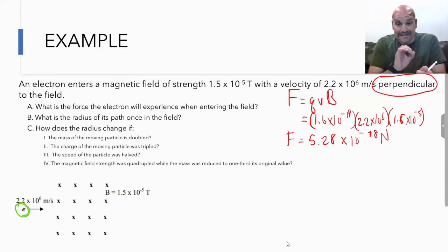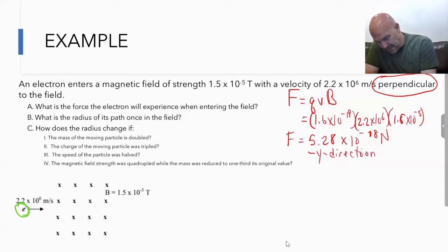Now what direction would it be? Again, velocity, our thumb is going to point in the direction of velocity. Fingers point in the direction of the field, which is into the page. V is going to go to the right. Remember our palm is the positive charge, but this is an electron, so the strength would be in the negative y direction.